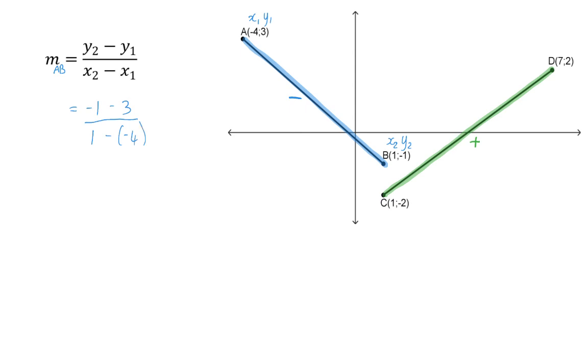So the gradient of line segment AB is minus 4 over 5. This means that for every 5 units we move in the positive x direction, we need to move 4 units down to form this specific line.